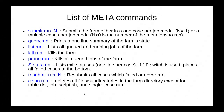Here's the full list of Meta commands you need to know. Starting with submit.run — it has one obligatory argument: either -1, in which case you're using simple one-case-per-job (applicable to jobs longer than 20 minutes), or a positive integer N, in which case you're using multiple-cases-per-job with dynamic workload balancing, and N is the number of meta jobs you want to run. The next command is query.run — it prints a one-line summary of the farm state: number of queued jobs, running jobs, and done jobs. list.run lists all the queued and running jobs of this particular farm. kill.run kills this farm. prune.run kills only the queued jobs of this farm without touching running jobs. status.run lists exit statuses, one line per case.